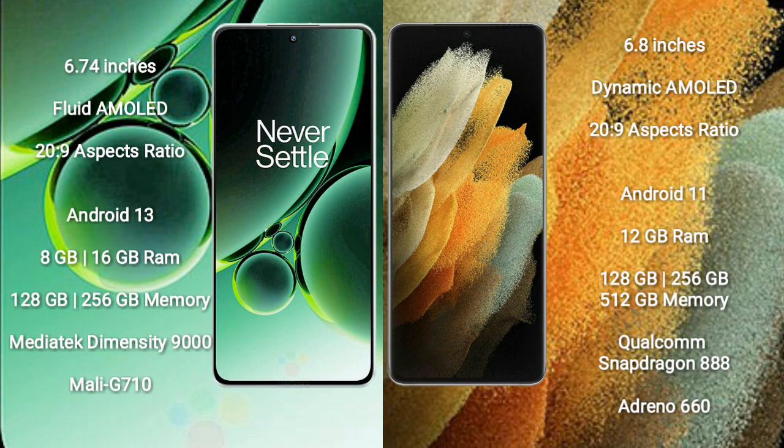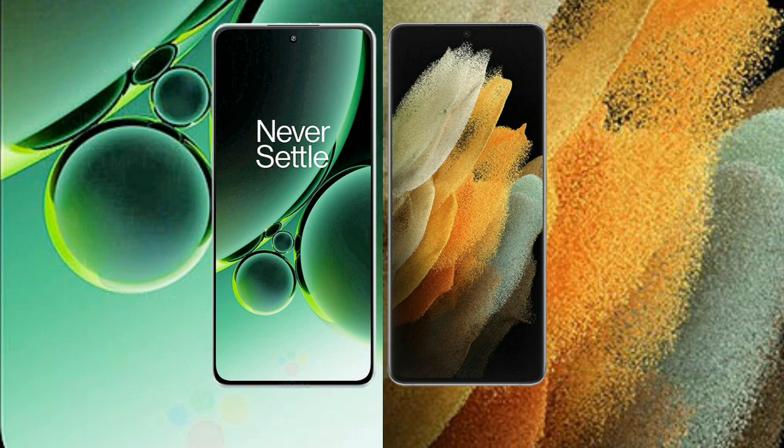Samsung Galaxy S21 Ultra comes with 12GB or 16GB RAM and 128GB to 512GB internal storage, Qualcomm Snapdragon 888 processor and GPU Adreno 660.